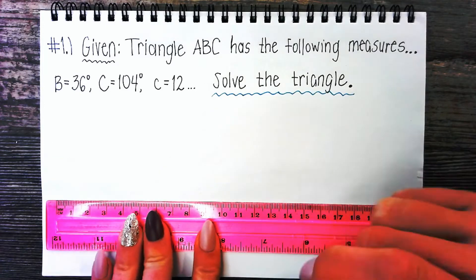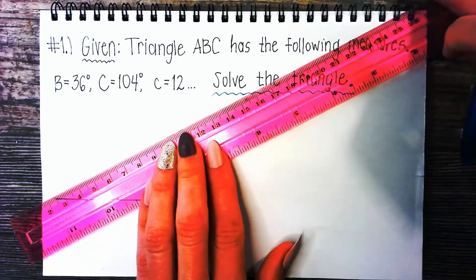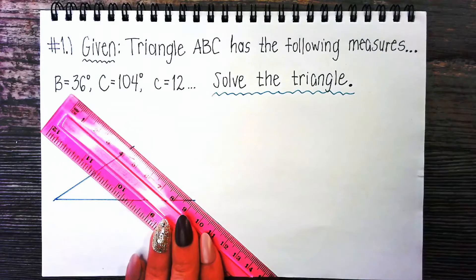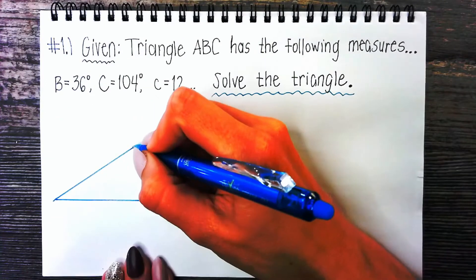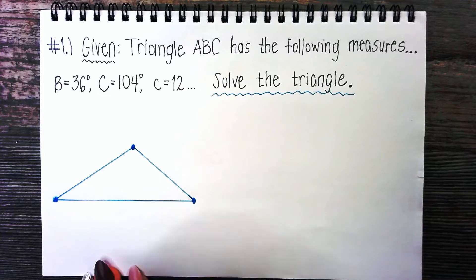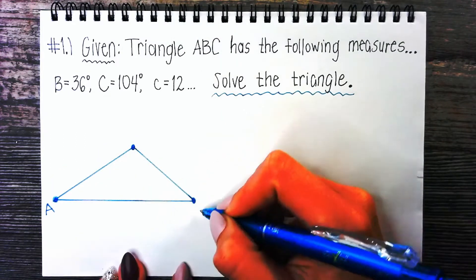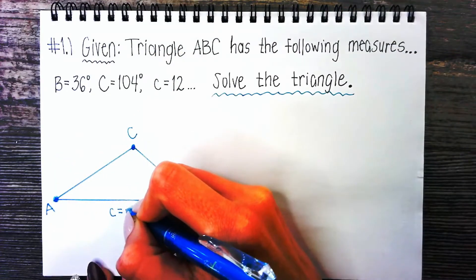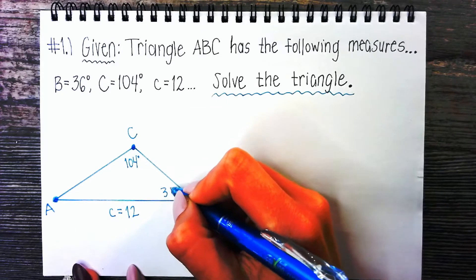I'm obviously not going to draw this to scale — I'm just using a ruler to make straight edges and draw a neat triangle. The capital letters A, B, and C represent the vertices or the angles. I'll put A in my bottom left corner, B in the bottom right, and C up top. That means side c is 12, angle C of 104 degrees is up there, and 36 degrees goes right here.